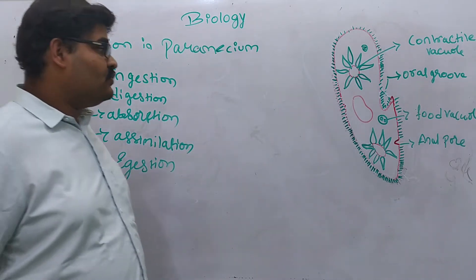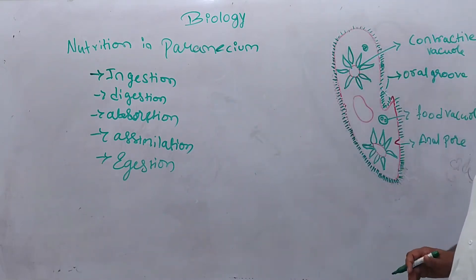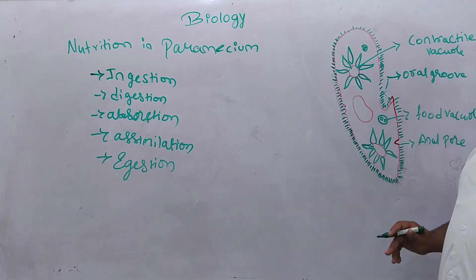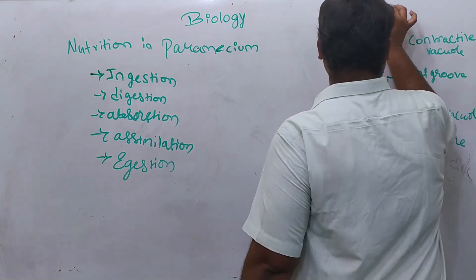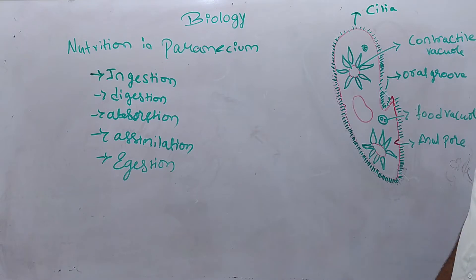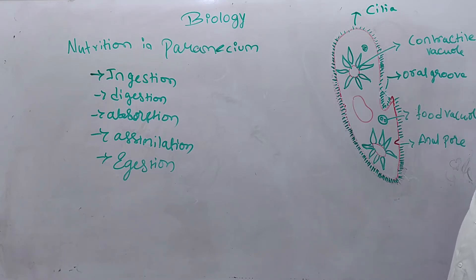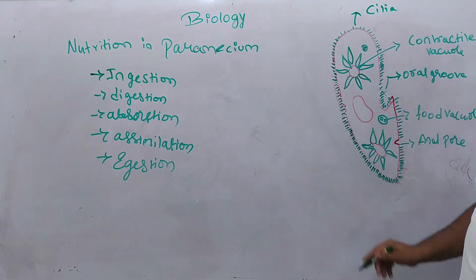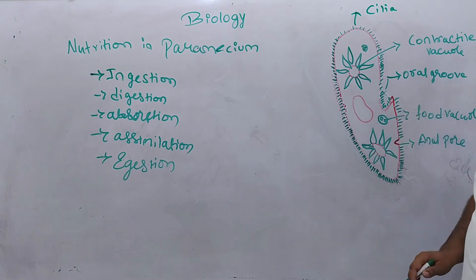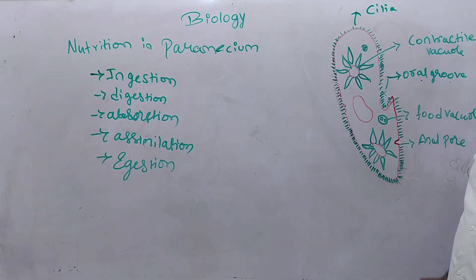This is the typical structure of Paramecium — you can look at the diagram in this video. You find tiny hair-like projections present all over the body, and these are called cilia. These cilia are the structures responsible for the ingestion of food in Paramecium. Whenever food is available, the cilia push the food towards a particular opening called the oral groove, which is like the mouth of the human body.